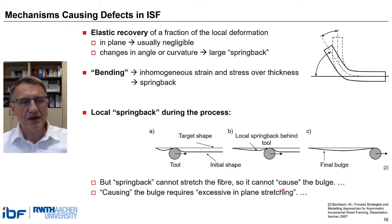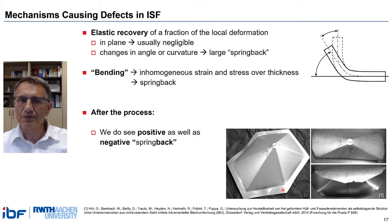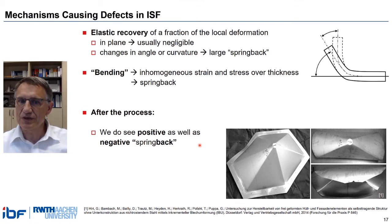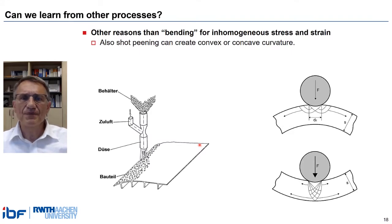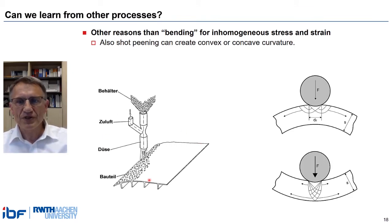Springback does not only happen during the process — it happens very often after the process, either upon unclamping or after trimming. Assuming that the curling we see here can be denoted as springback, various researchers have observed positive as well as negative springback, meaning that springback can occur towards the tool or away from the tool. How can a similar type of movement once create a curvature towards the tool and in another case a curvature away from the tool? Can we learn from other processes? If we look at shot-pin forming, this effect is well known. Depending on the impact energy, the plastic zone is either located in the upper half of the workpiece, leading to a convex shape, or the plastic zone is penetrating through the workpiece, leading to a concave shape.